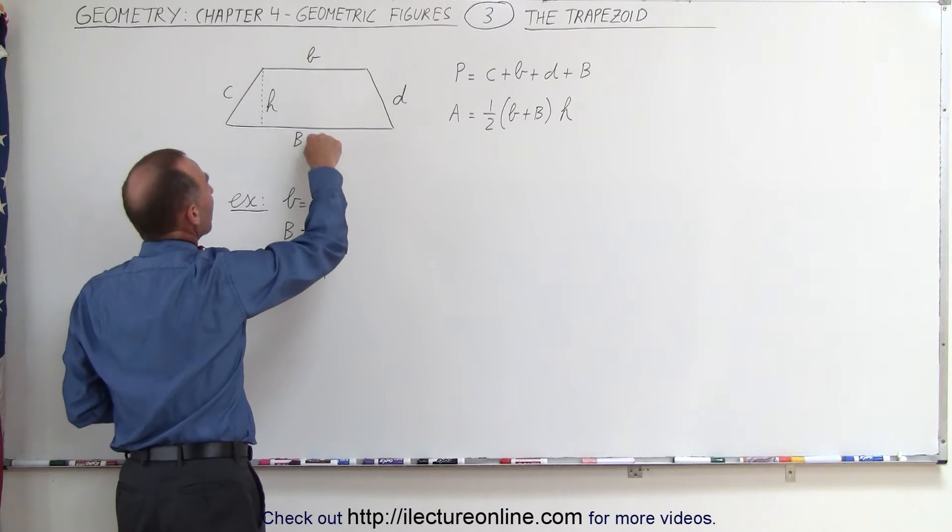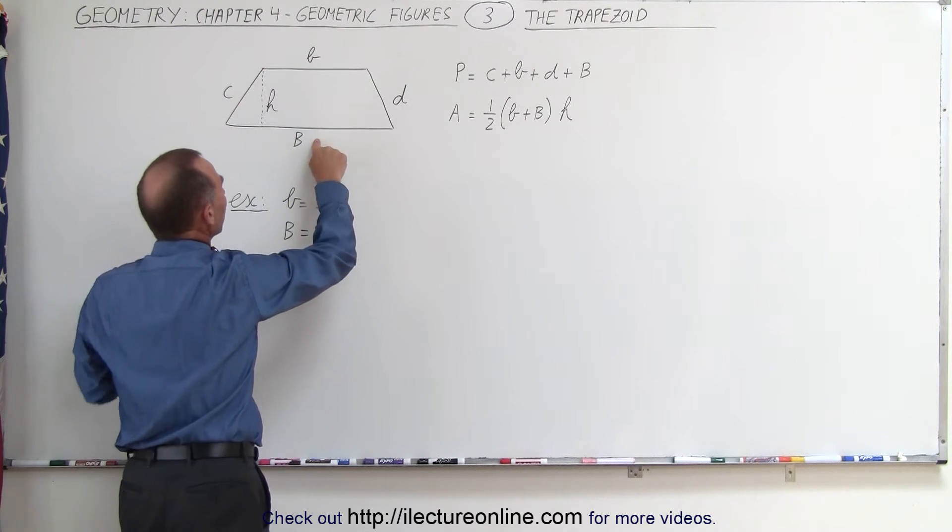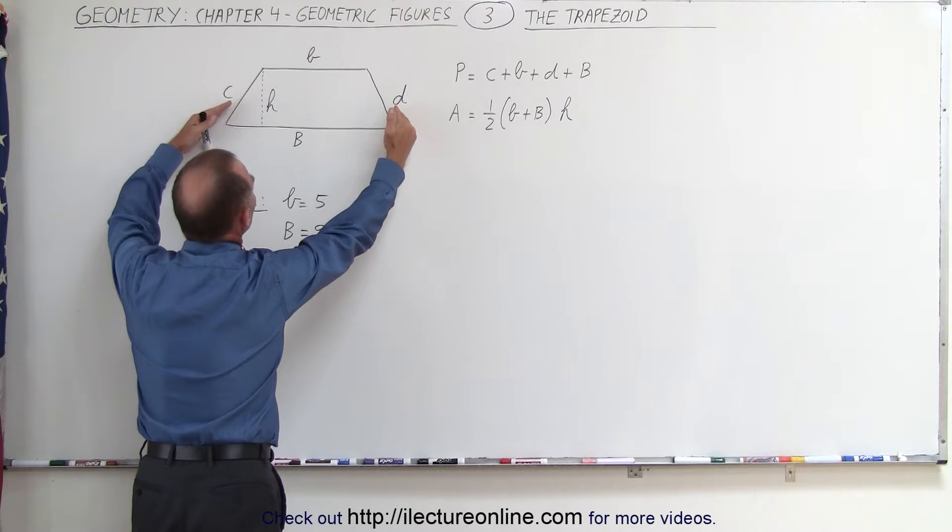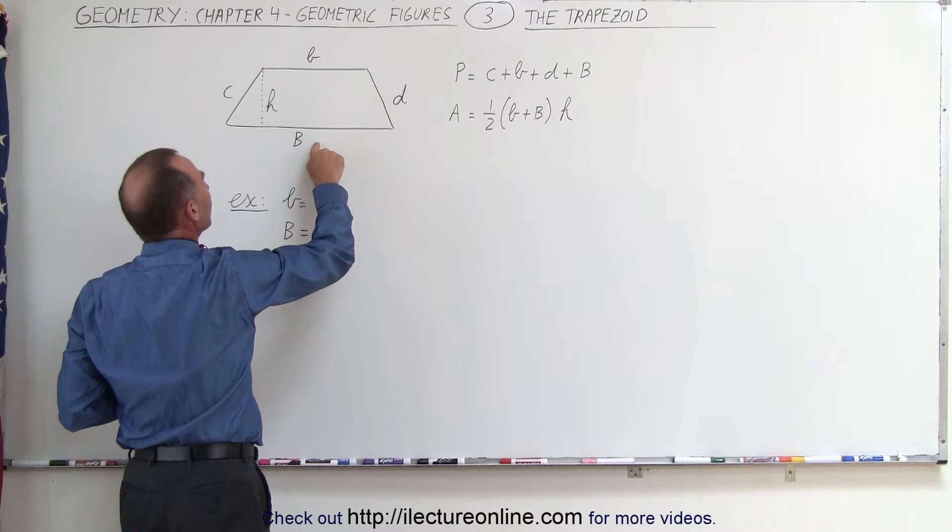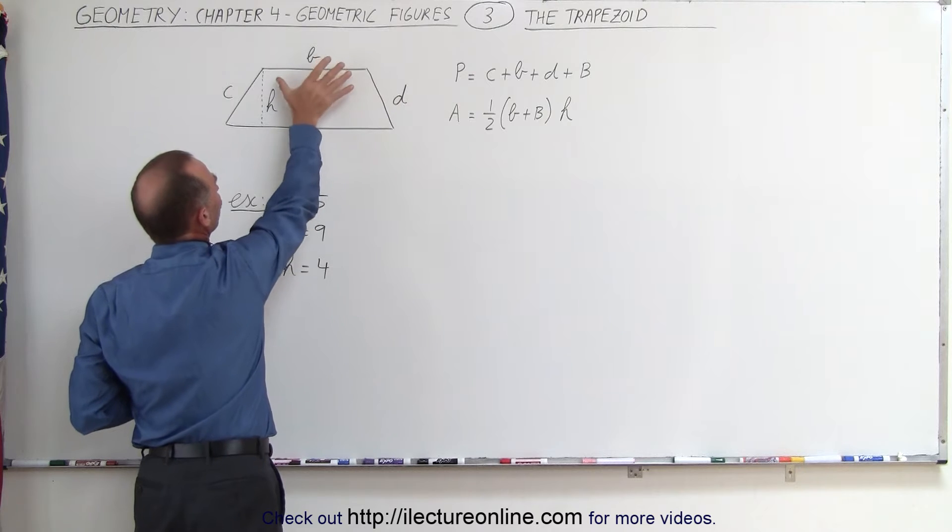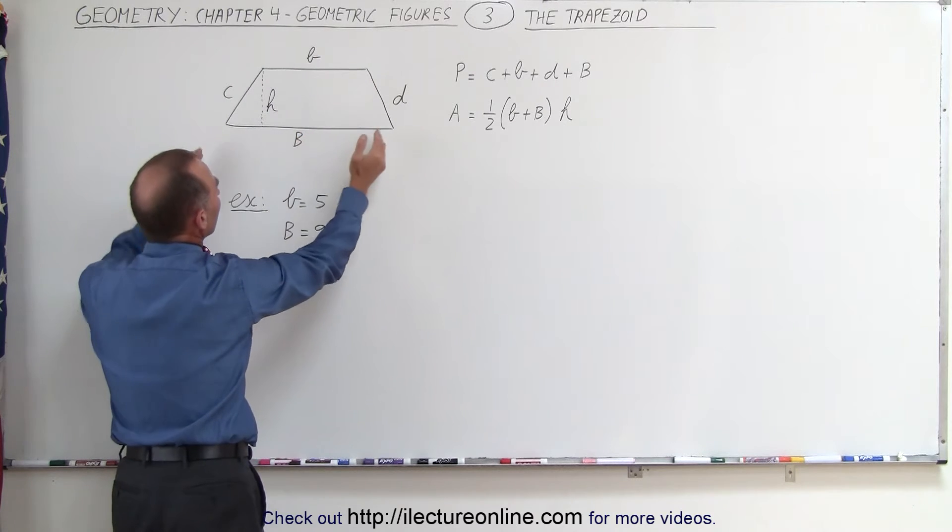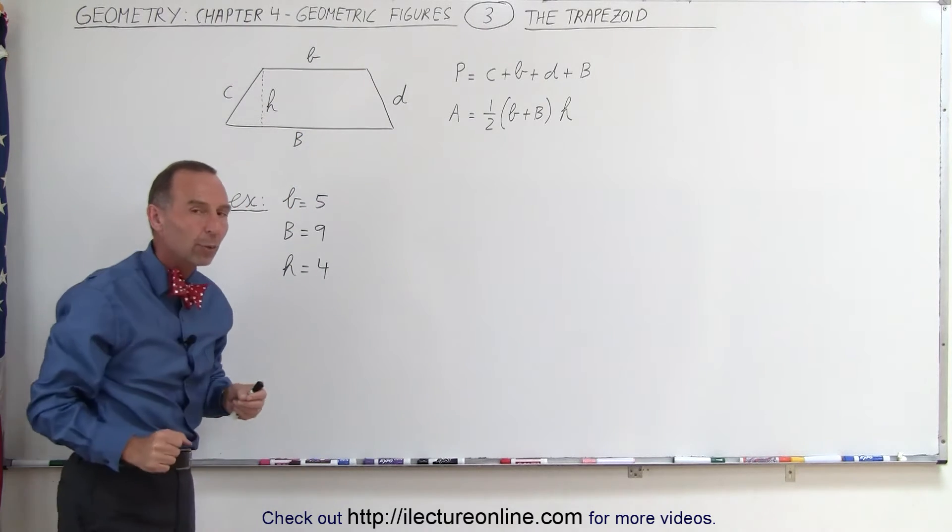Here you can see that the top and the bottom are parallel to one another, but the left and the right sides are not. We've labeled the shortest of the two parallel sides as small b and the longest as big B.